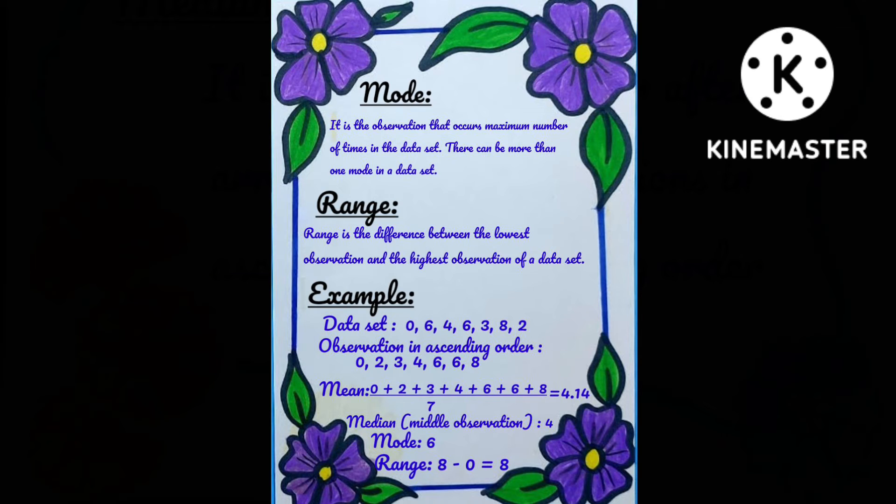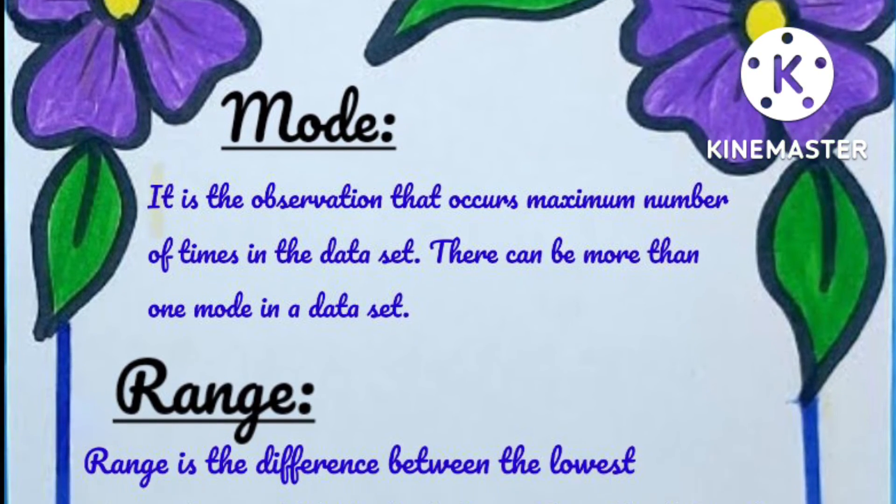The highest number and the lowest number. Here difference means subtraction. We have to subtract the lowest number from the highest number. Here eight is the highest number and zero is the lowest number, so we subtracted zero from eight. Let's have a close look of the page.